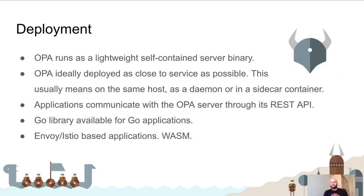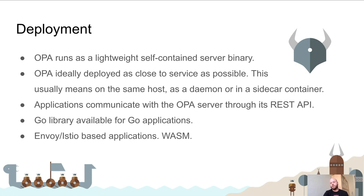OPA itself is a tiny self-contained binary — a single file you just run with everything included. Ideally, you deploy OPA as close to your service as possible, normally on the same host or as a Kubernetes sidecar. When you query OPA, it's always a localhost call, and the benefit of this approach over a centralized OPA is that the distance between your app and OPA is as short as possible to keep latency down.